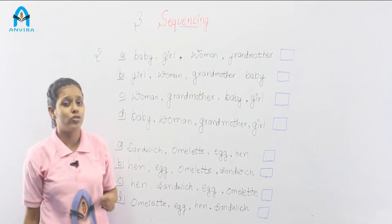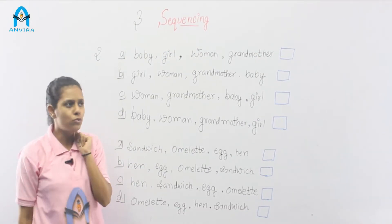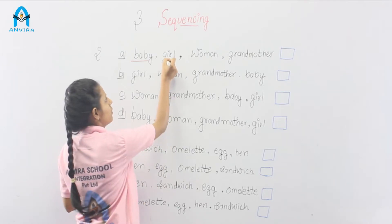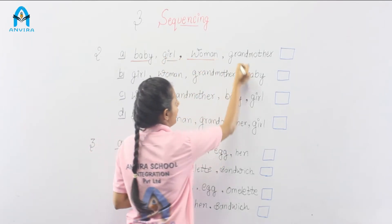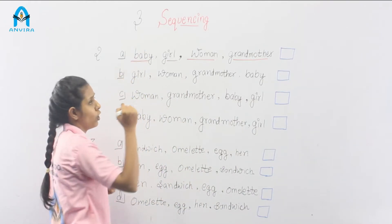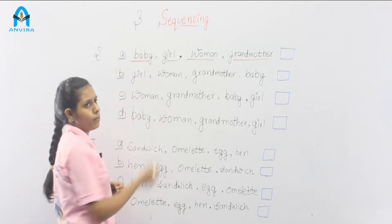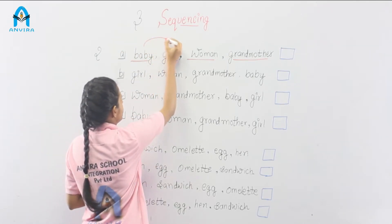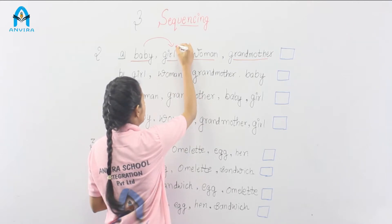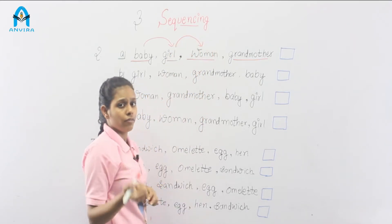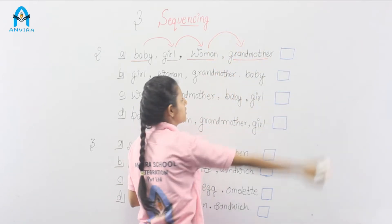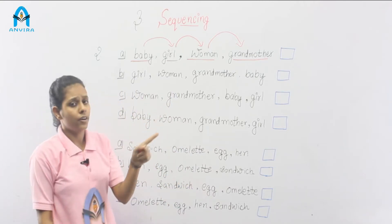Now let's go to question number 2. Look at option A: baby, girl, woman and grandmother. First of all anybody is born — it's a baby. Then it is a girl. When the girl is grown up, she is a woman. And when the woman grows up, she is a grandmother. This is a right sequence.